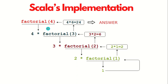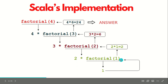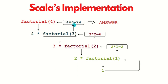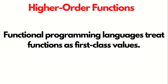This is Scala's implementation along with a graphical representation of the factorial of 4. You can see the directions showing how the program proceeds step by step, going down and then back up, ultimately giving the answer 24: 1 × 2 × 3 × 4 = 24.